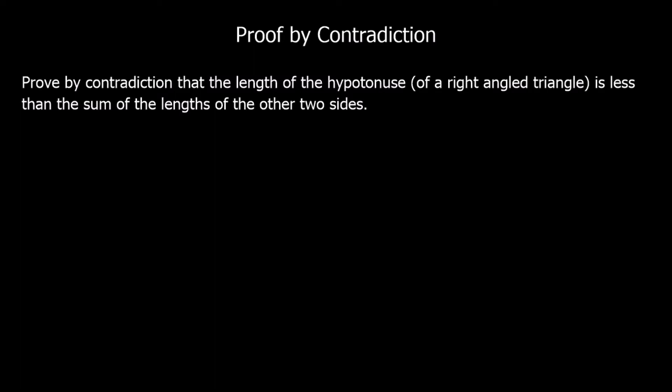Here we've got a question: prove by contradiction that the length of the hypotenuse of a right-angle triangle — the longest side — is less than the sum of the lengths of the other two sides. We're going to start by assuming the opposite is true, and then we're going to find a contradiction — find something wrong with it.